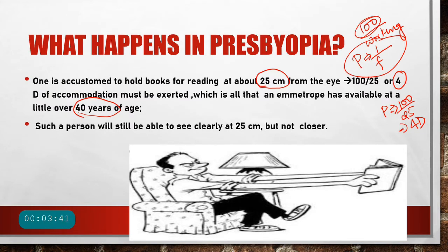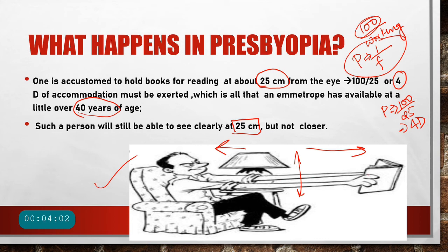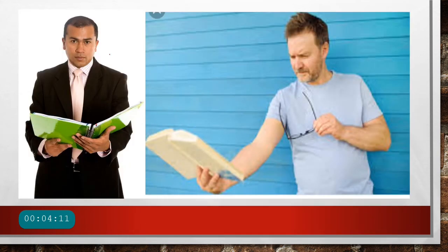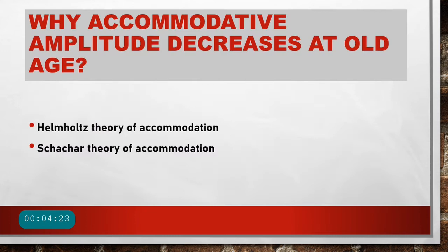As the amplitude of accommodation decreases, the working distance will also increase and the patient will have to put their book farther away than 25 centimeters. The closer we need to see, the more amplitude we need; if we do not have amplitude, we must put reading material farther away — as seen in this cartoon, where the presbyopic individual tries to hold the book as far as possible to clear the print.